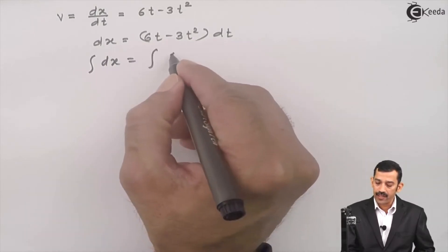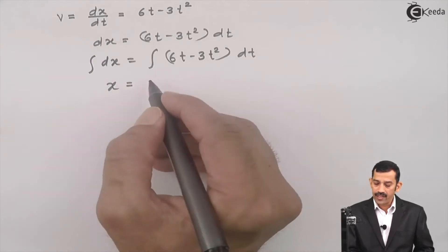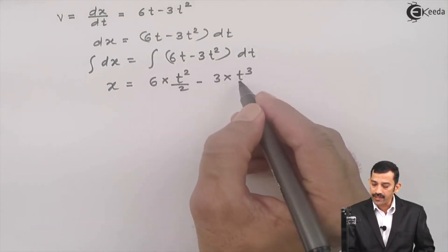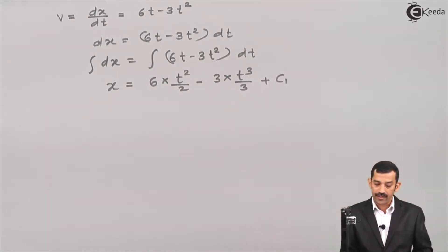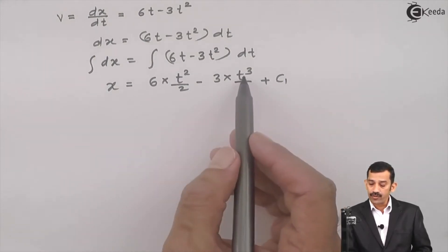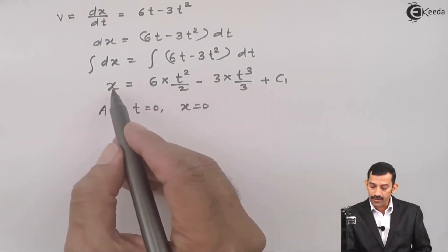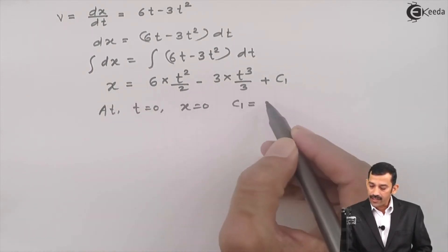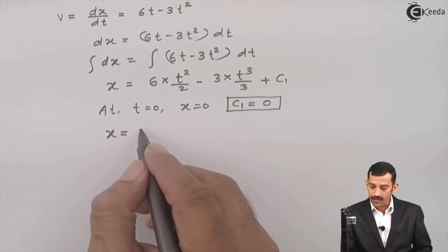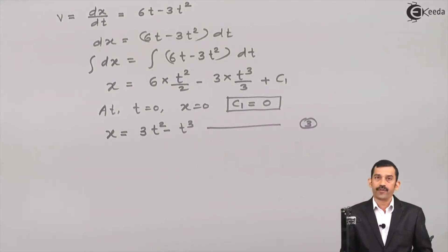Integrating both sides: x = 6·(t²/2) minus 3·(t³/3) plus C₁. Applying the boundary condition — at t = 0, x = 0 — the constant of integration C₁ = 0. Therefore the equation of position simplifies to x = 3t² minus t³, which is equation number 3.